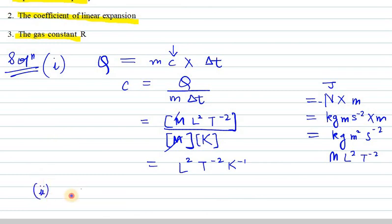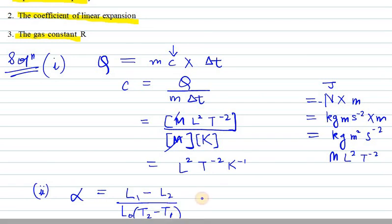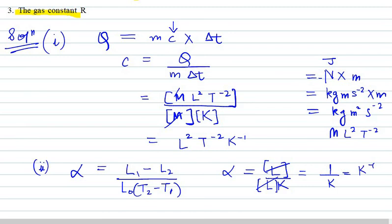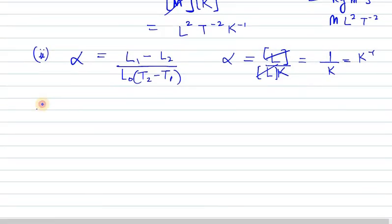Now the second one: coefficient of linear expansion. Alpha (α) can be written as (L1 - L2) / (L0 · (T2 - T1)). Alpha depends on L over L·K, because we have length in the numerator and length L0 again in the denominator, then K for temperature. L and L cancel out, leaving 1/K, which is K⁻¹. So the dimension of α is K⁻¹.